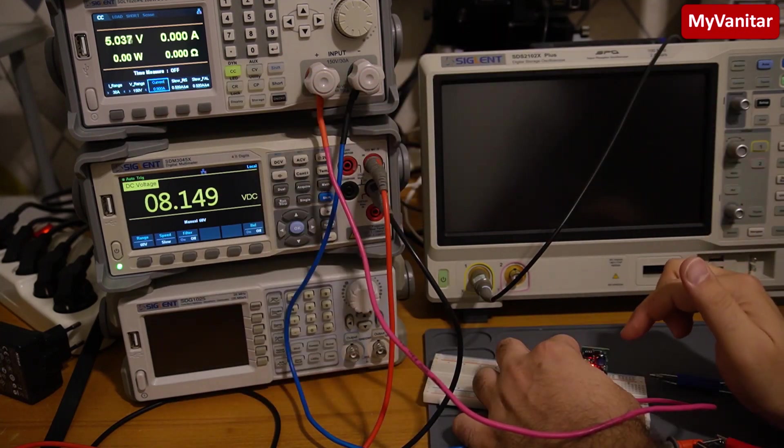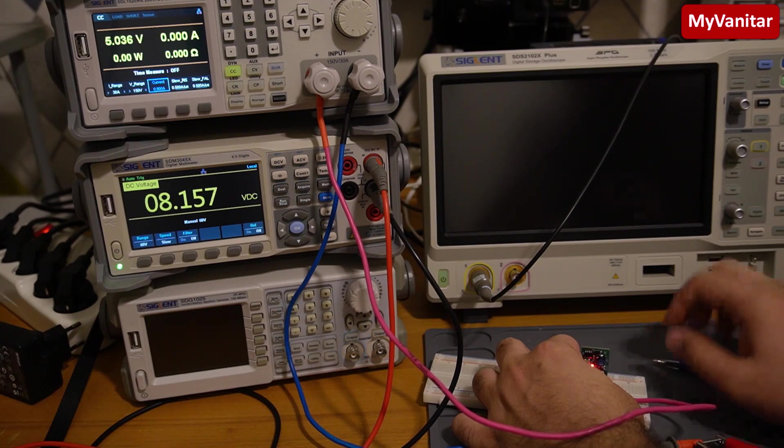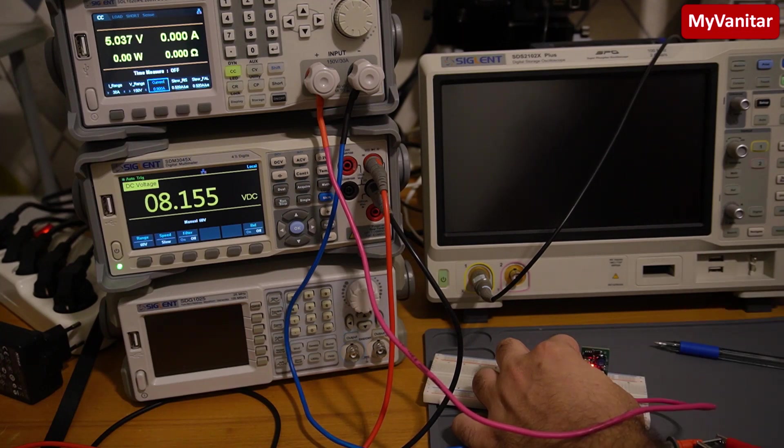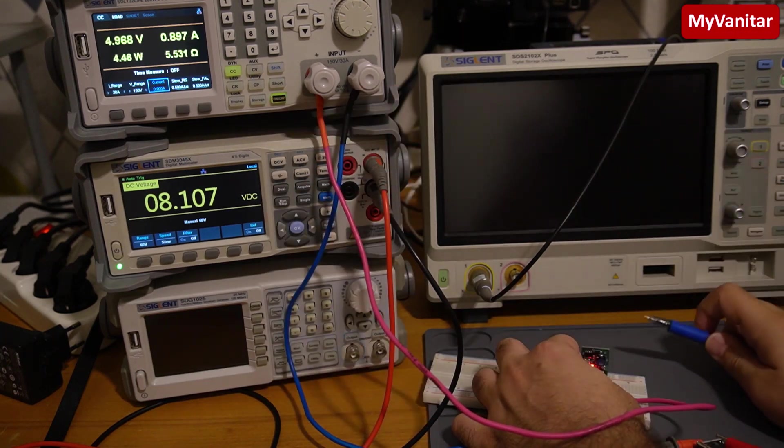I think it was lower than maybe 15, 12 or something. Anyway, let's apply 900 milliamps to the output. And why 900? Because I don't want to go in the saturation point of the inductor. I think it's 960 milliamps. So 900 milliamps for the output is pretty nice. Let's apply the current to the output.